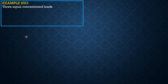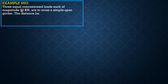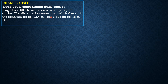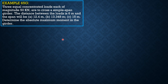Now let's apply these results. Three equal concentrated loads each of magnitude 50 kN are crossing a simple span girder. The distance between loads is H = 6 meters. The spans are: (A) 12.4 m, (B) 13.348 m, and (C) 15 m. Determine the absolute maximum moment in the girder.